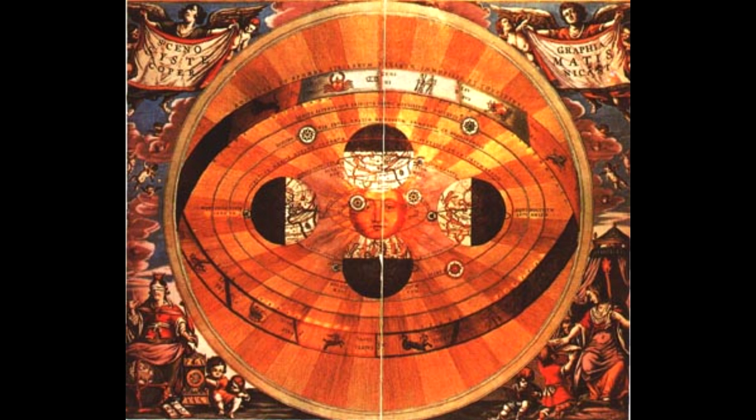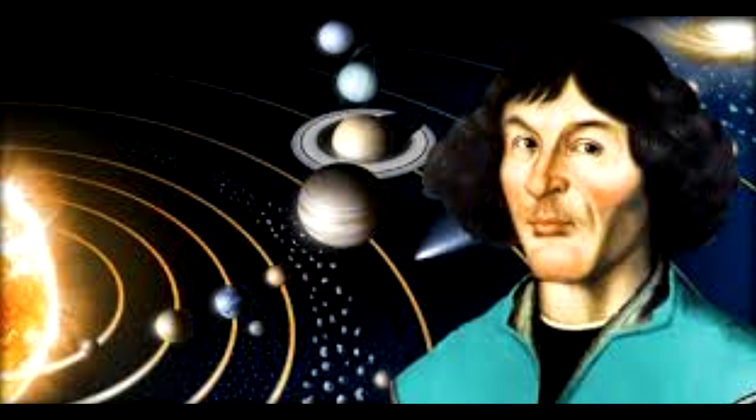The idea that the earth revolved around the sun, and not vice versa, went directly against the teachings of the church, and this publication was in a time when the church controlled most of society. Although Copernicus died in the year of his great work's publication, he still no doubt feared persecution from religious authorities and realized that even after death his name and the reputation of his work could be soiled.